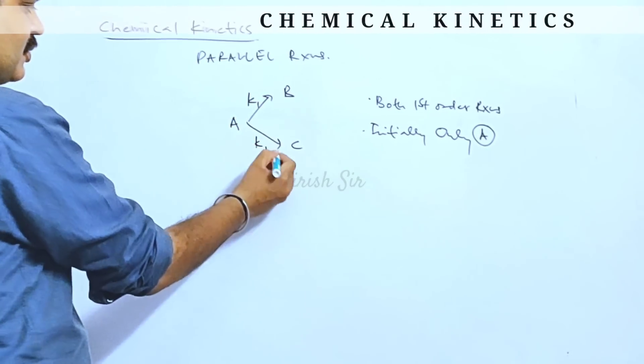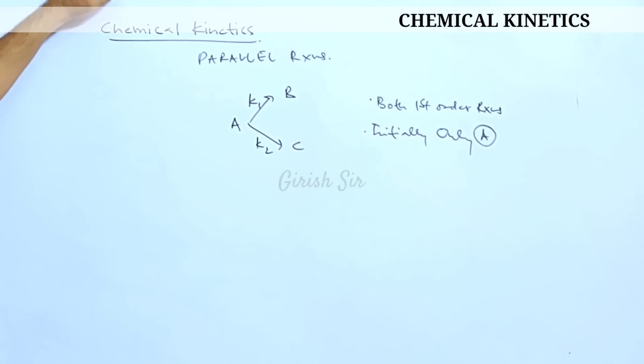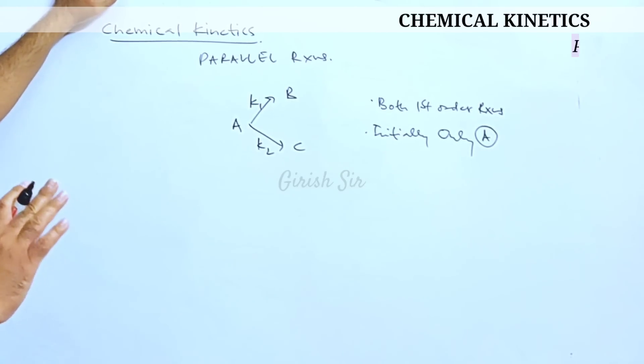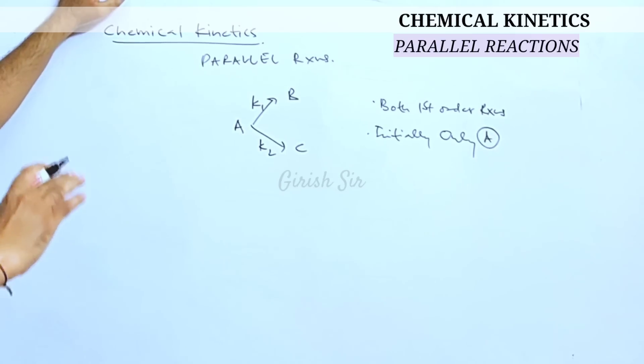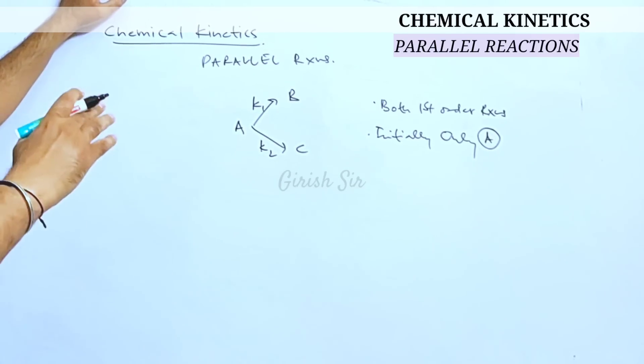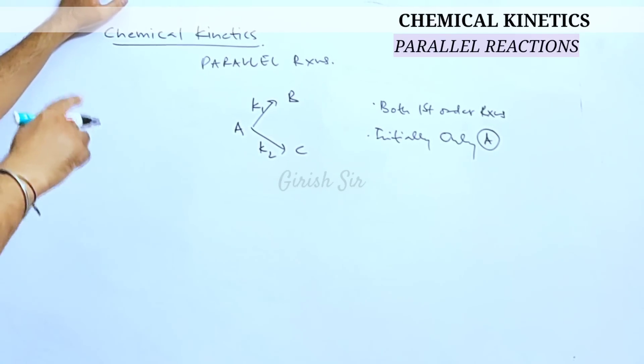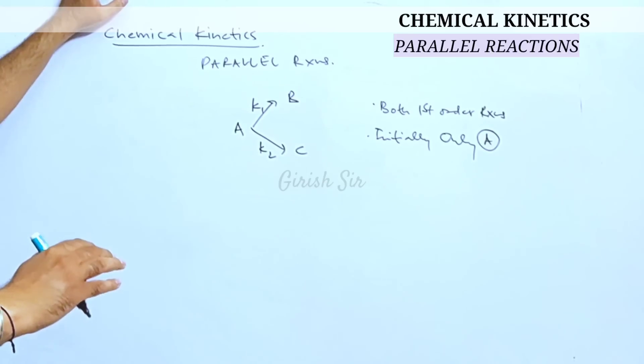Let the rate constants be K1 and K2 for the two parallel reactions. So I'll say that again we have two parallel reactions A changing to B and A changing to C. Both the reactions are given as first order reaction.